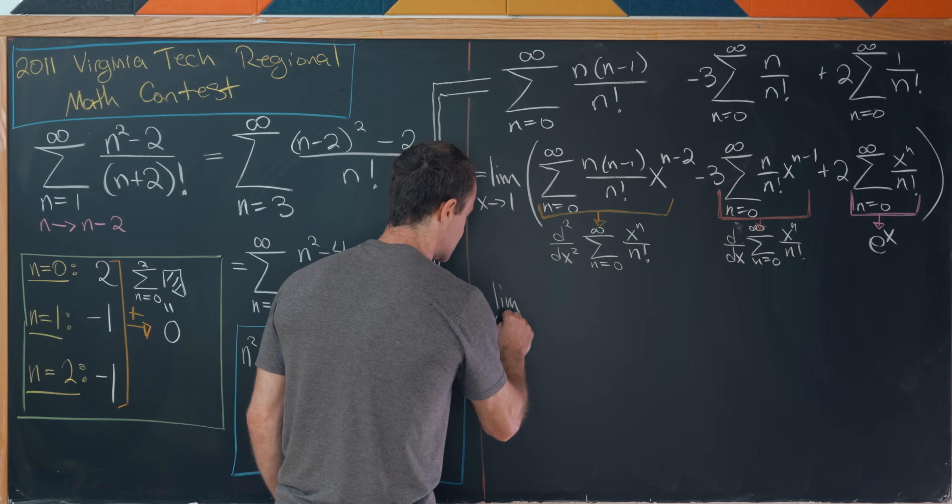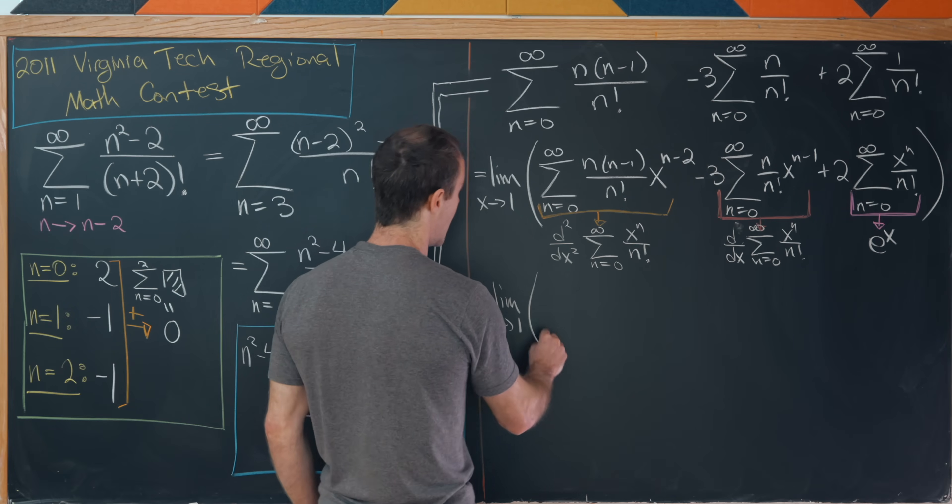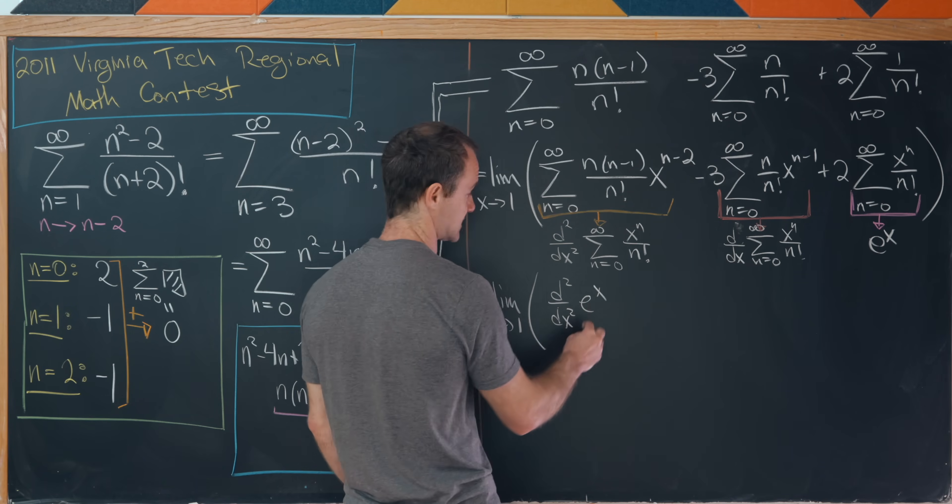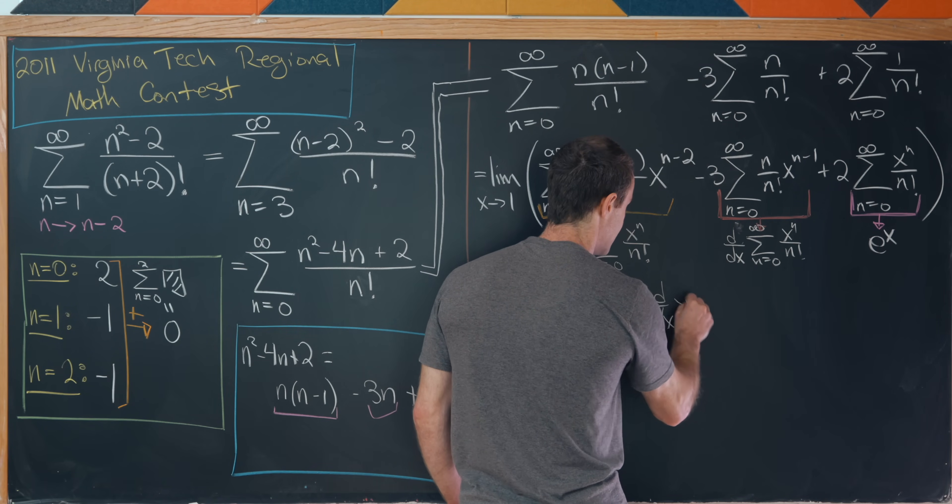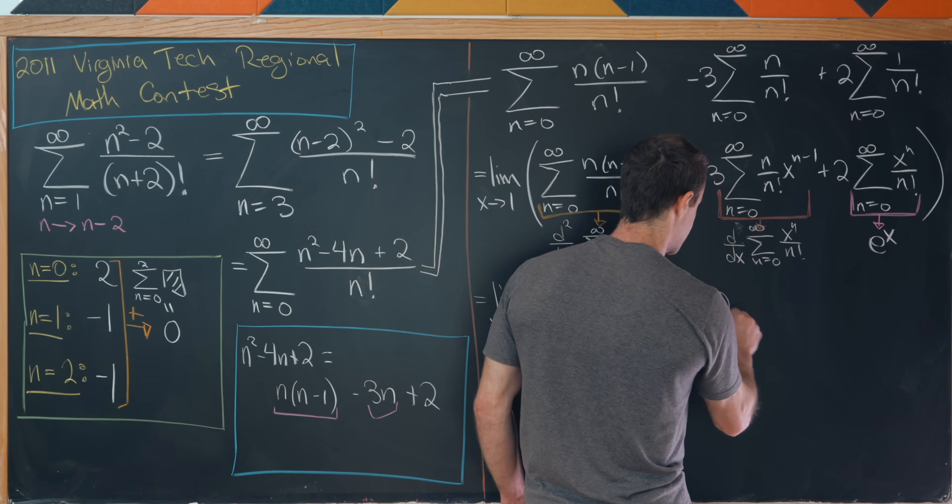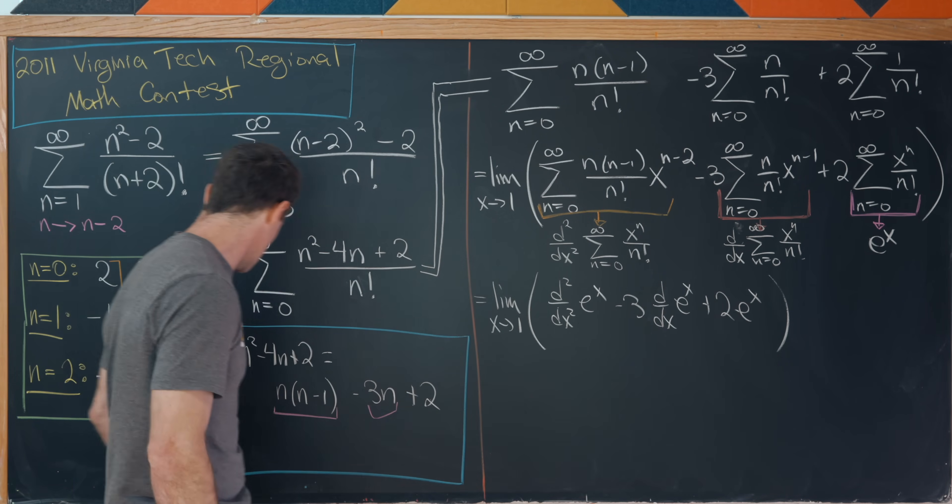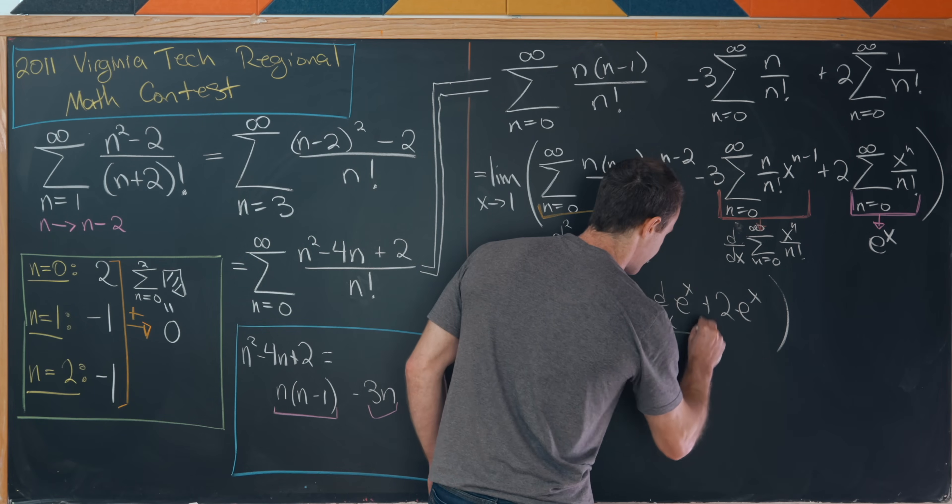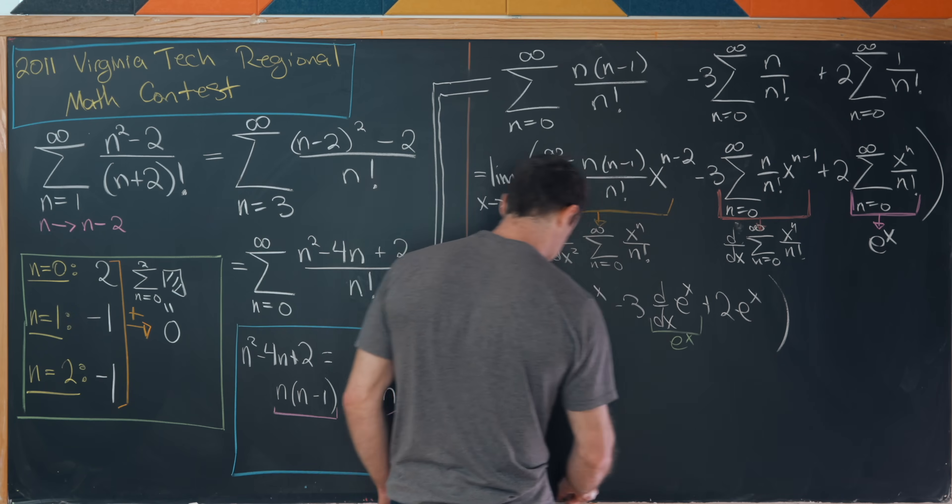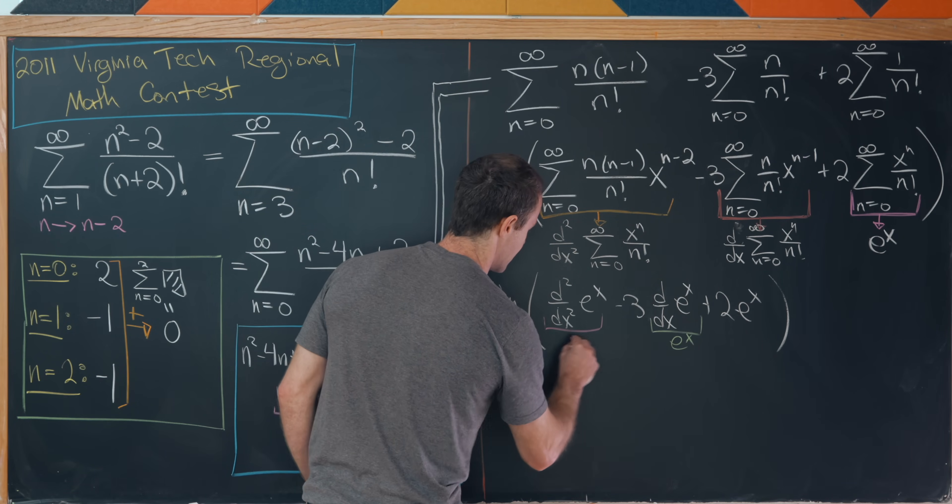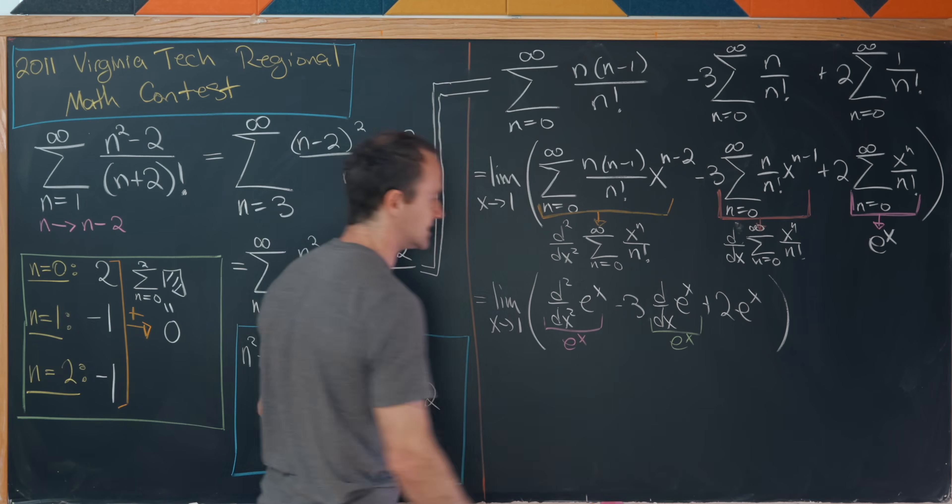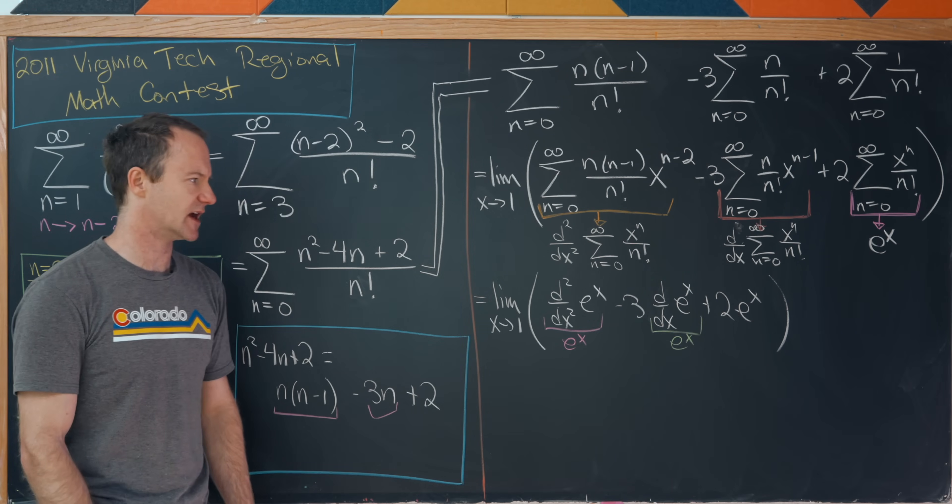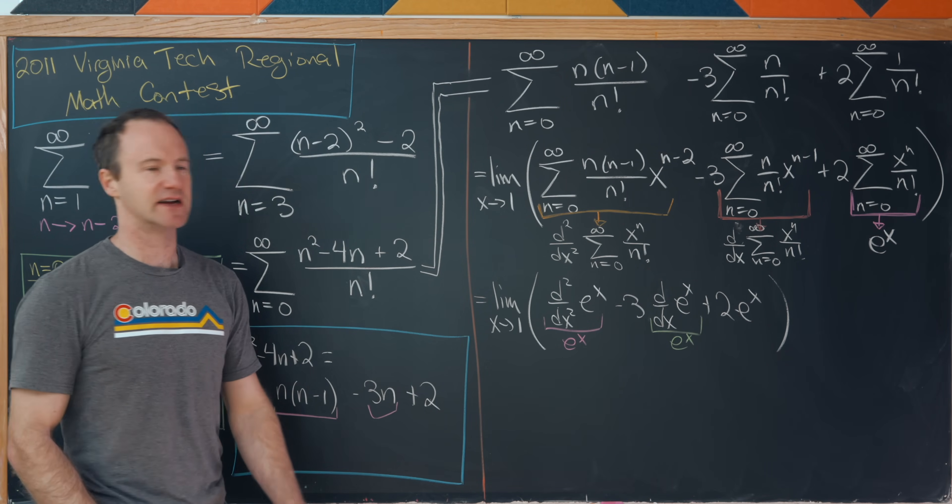This ends up being the limit as x goes to one of the second derivative of e to the x minus three times the derivative of e to the x plus two times e to the x. But now we get some very quick simplification. So the first derivative of e to the x is of course e to the x. The second derivative of e to the x is also e to the x. So let's see we have e to the x minus three e to the x plus two e to the x. Well that all simplifies to zero.